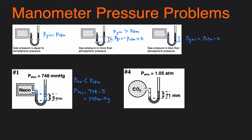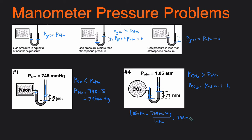Next, we're determining the pressure of CO2. The CO2 line is lower than the atmosphere line, so CO2 is pushing more strongly down than the atmosphere. That means the pressure of CO2 is greater than atmospheric pressure. So: pressure of CO2 equals pressure of the atmosphere plus the height difference. The atmosphere and height difference are in different units, so we convert 1.05 ATM to mmHg: 1.05 ATM × (760 mmHg / 1 ATM) = 798 mmHg.